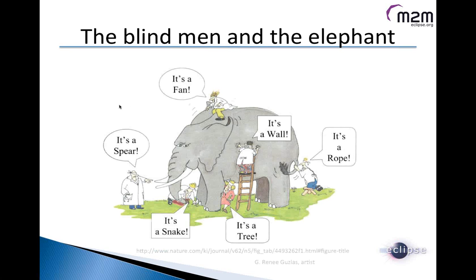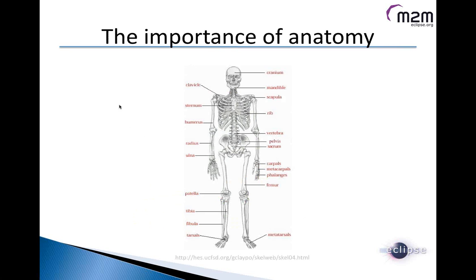A picture I like to use when describing M2M is the Blind Men and the Elephant. The basic idea is that many different people who can't see are touching different parts of the elephant and trying to describe what it is — each thinking it's something different. This is a lot like M2M, because if your experience is on the enterprise side it feels one way, and if your experience is writing device drivers for sensors it feels completely different. What we hope to do today is give names to the different pieces and describe how they fit together.